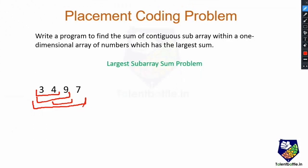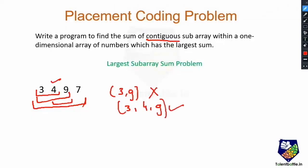Note that 3,9 — even though it is a subarray — is not a contiguous subarray, because we have omitted the number 4. So this is not contiguous. We need to find contiguous subarrays. So 3,9 is not contiguous, but 3,4,9 is a contiguous subarray. Similarly, 4,9 is also a contiguous subarray. I hope you have understood the meaning of contiguous subarray.